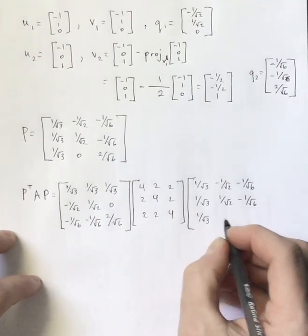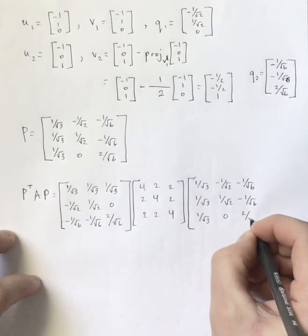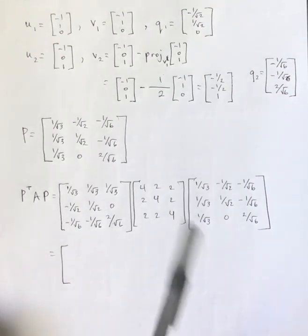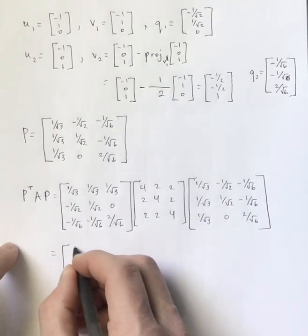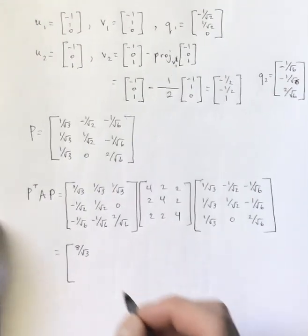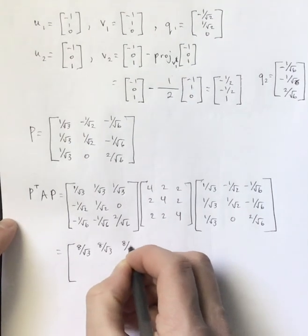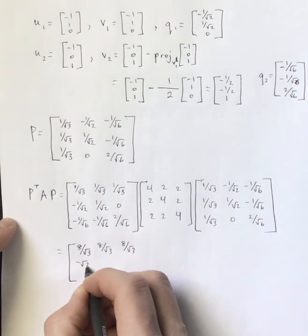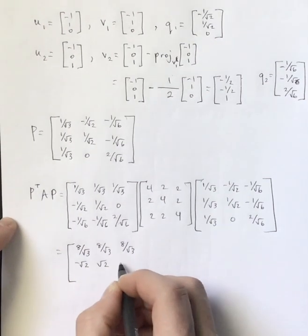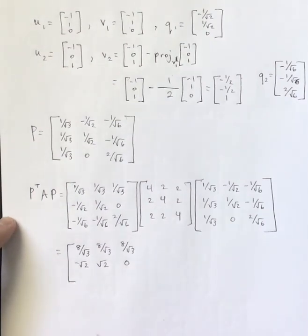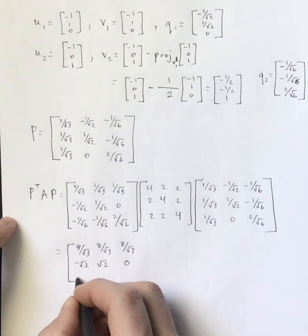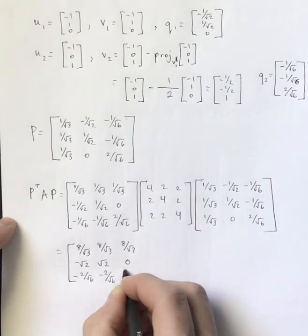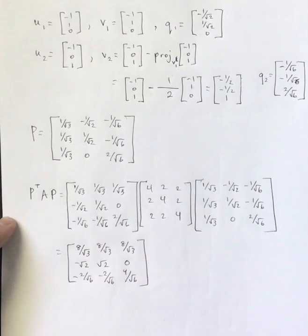So I will multiply, and it doesn't matter which order we do that in, because remember that matrix multiplication is associative. But I'm going to start by just multiplying the first two together. So this is going to be, let's see, 8 over root 3. In fact, 8 over root 3 all along the top row. And then we're going to get, let's see, negative root 2, root 2, and 0 for the second row. And then we're going to get negative 2 over root 6, negative 2 over root 6, 4 over root 6 for the third row.